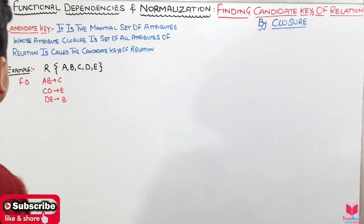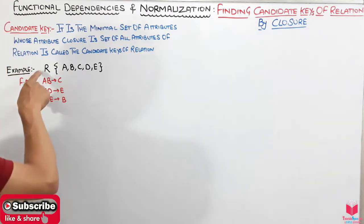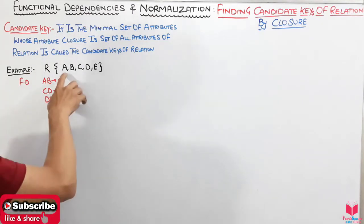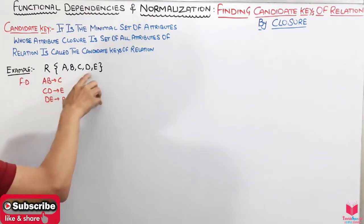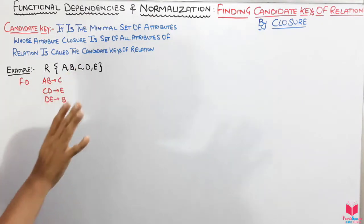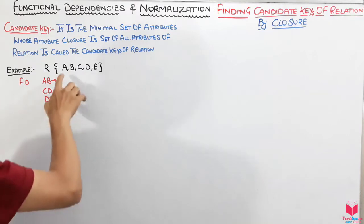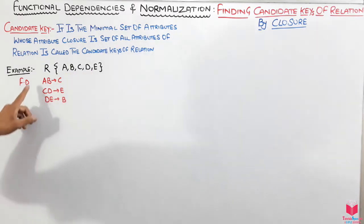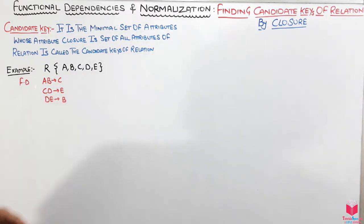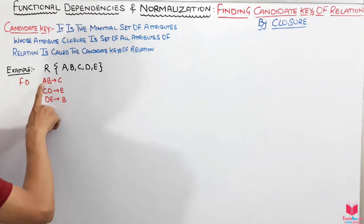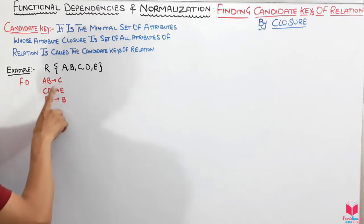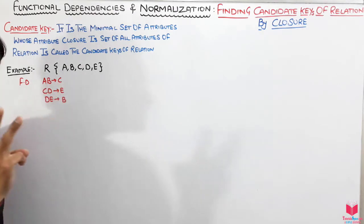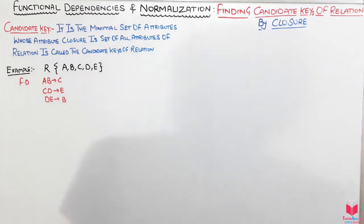Let's take an example. We have a relation with five attributes: A, B, C, D, E. The functional dependencies are: AB → C, CD → E, and DE → B. We have to find the candidate key.